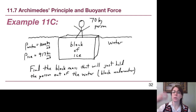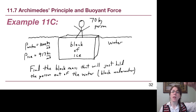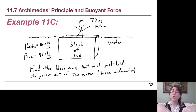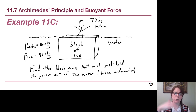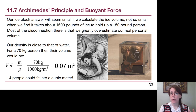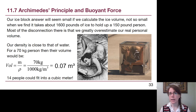Another example has a person standing on a block of ice. The person's weight is pushing down on the ice, and the weight of the ice itself is pushing down too, so the buoyant force has to balance both of those forces. We'll see how that plays out in a separate example video. The ice volume doesn't seem that big when we calculate it, and we'll get that in a separate video.